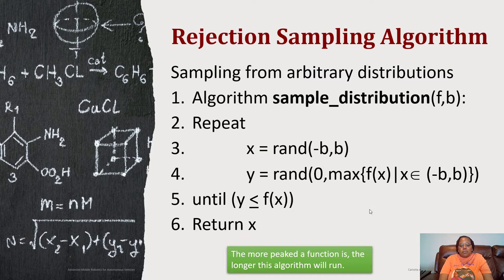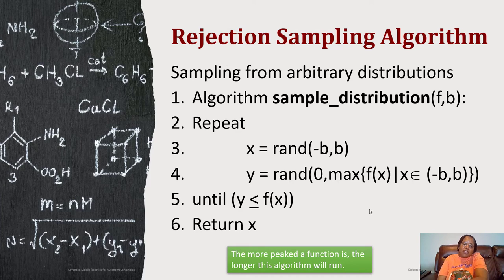Sampling from arbitrary distributions means you're going to generate a random number between negative b and b, then calculate y, which is a random number between zero and the maximum value of f of x where x is between negative b and b. You're going to keep doing this until y is less than or equal to f of x, then return that x value. Note that because you're having to do a search of values to determine which to use, this could take longer. The more peaks you have in a function, the longer it may take for this algorithm to run to get the values for sampling.